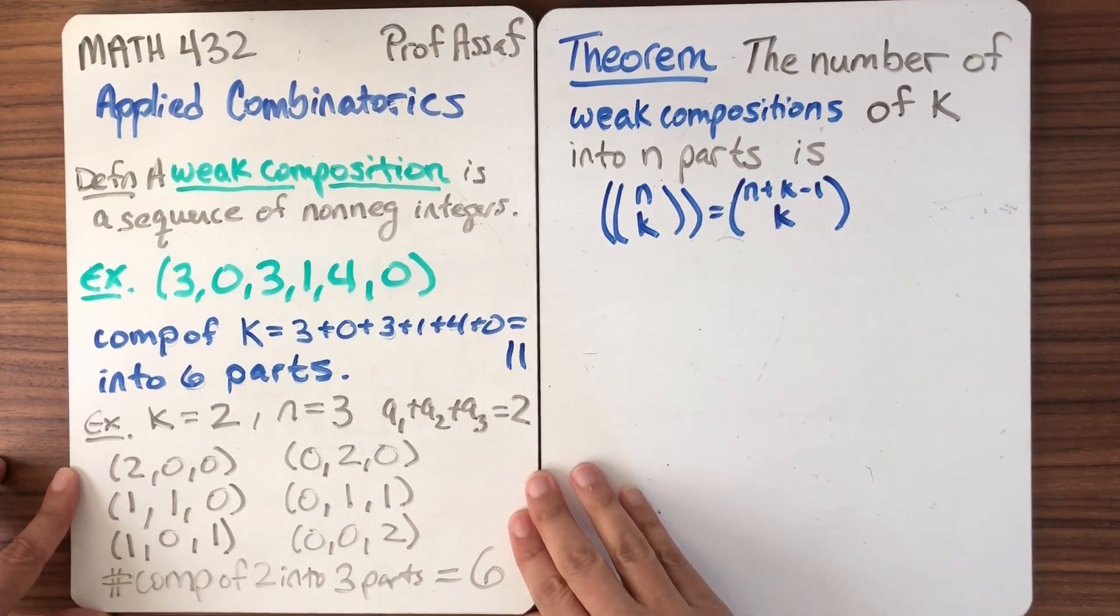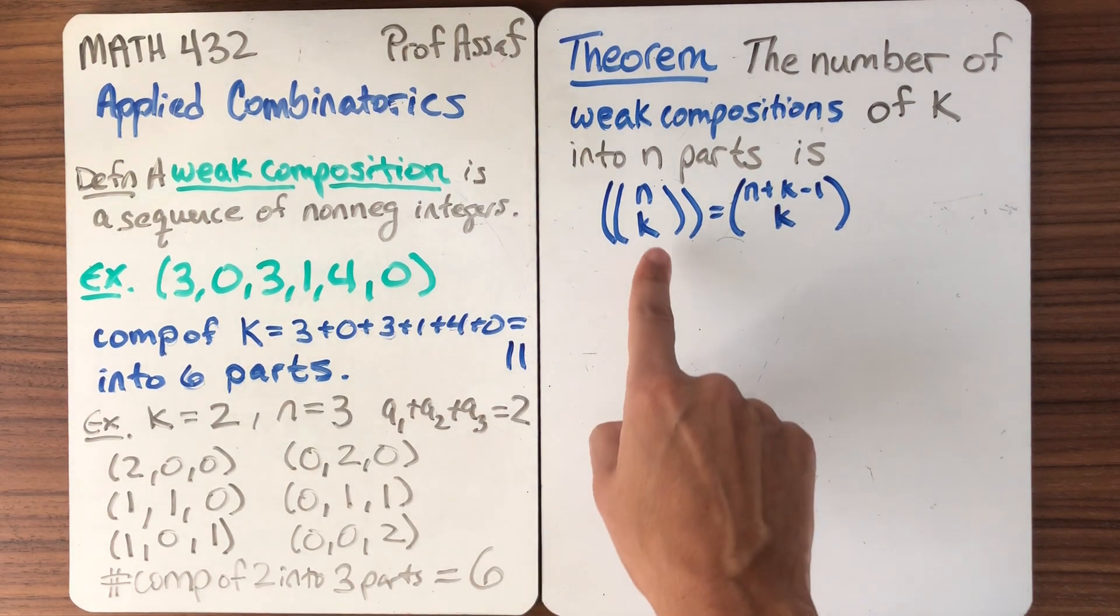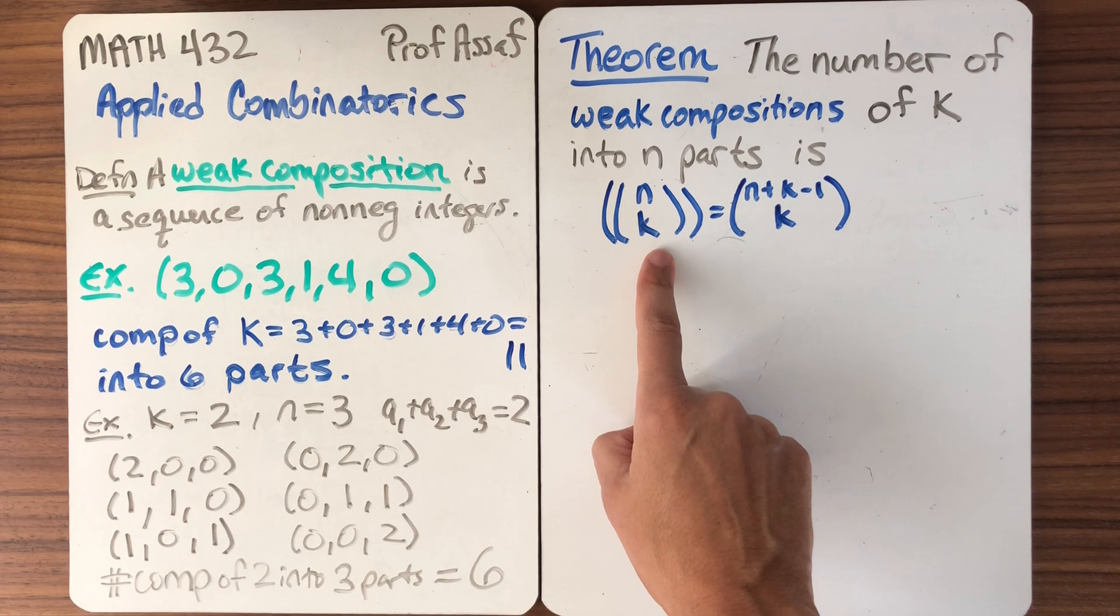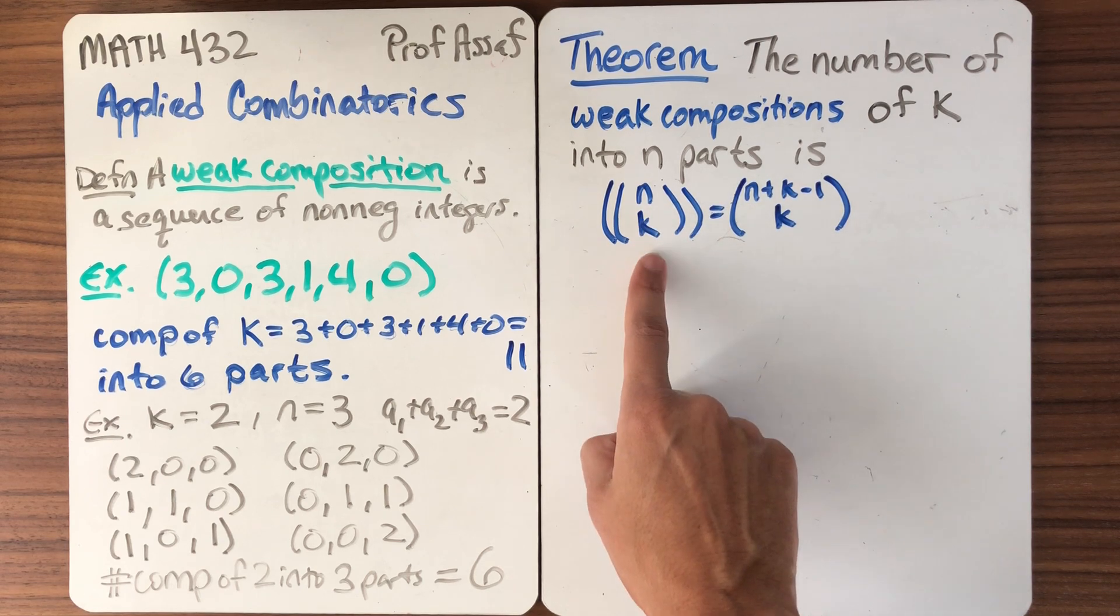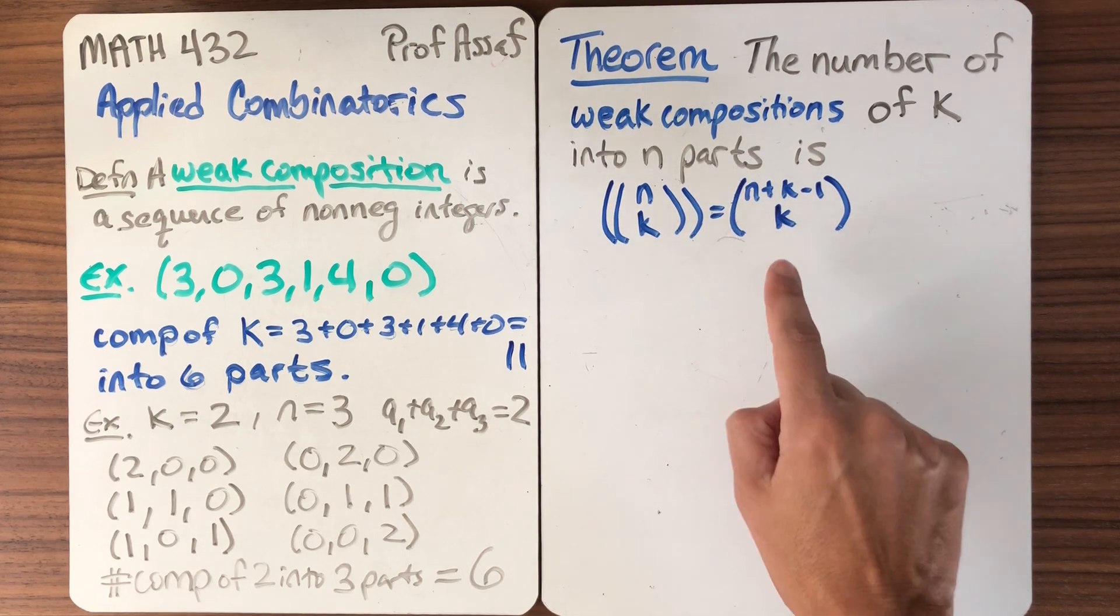So here's the theorem. If we want to enumerate compositions of k into n parts, it's just this multi-choice coefficient. n choose k with repetition, which we've seen before from our stars and bars arguments, is n plus k minus 1 choose k.